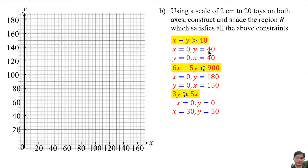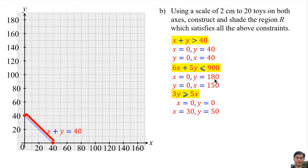For the first line, plot x equals 0 with y equals 40, and y equals 0 with x equals 40. Connect both points with a dashed line because there is no equal sign. More than means above the dashed line. For the second line, plot x equals 0 with y equals 180, and y equals 0 with x equals 150. Connect both points with a solid line. Less than or equal means below the solid line.